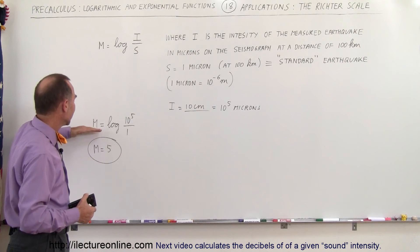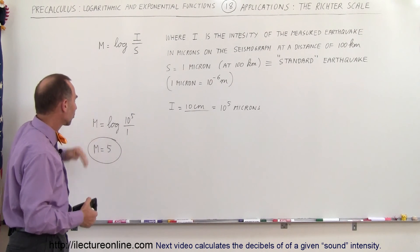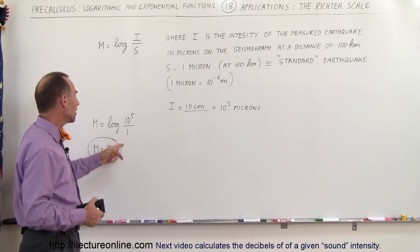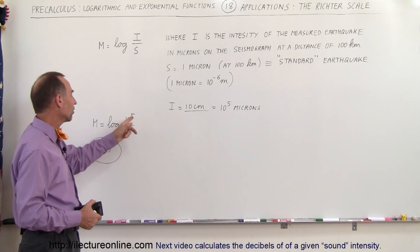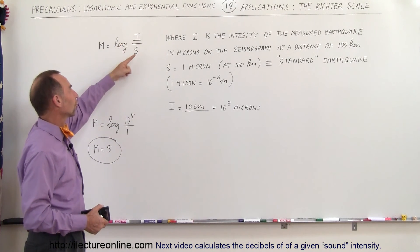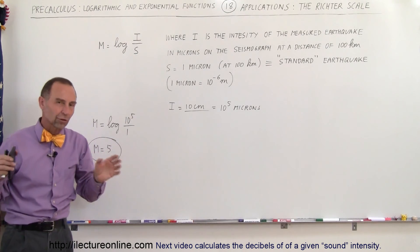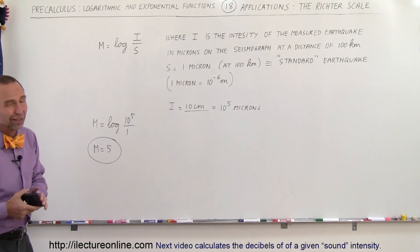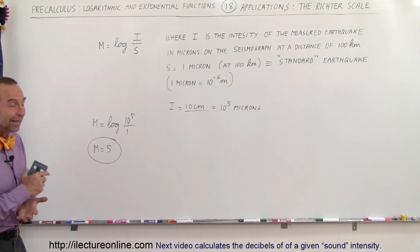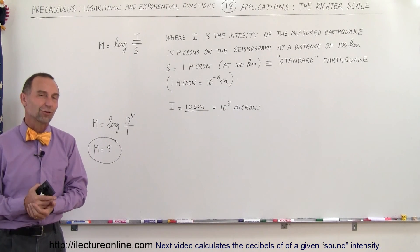So you can see that for very strong intensity earthquakes, the measure on the Richter scale becomes quite large. But magnitude 5 simply means the ratio is 10 to the fifth divided by one — the intensity of the measured earthquake divided by the intensity of the standard earthquake. That's how we use the Richter scale to find the measure of earthquakes.